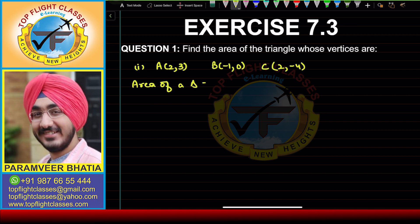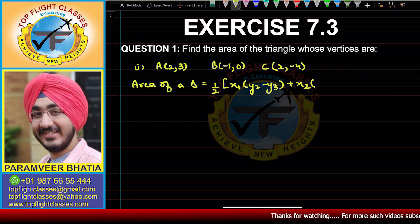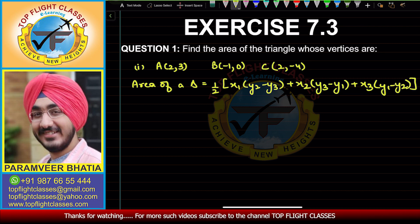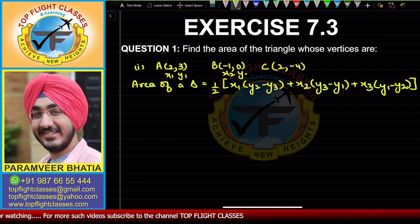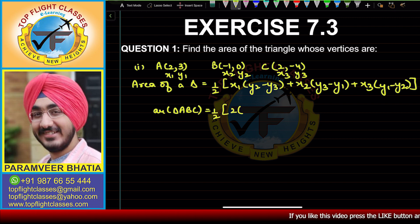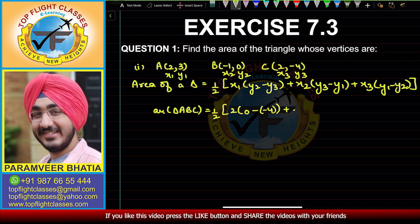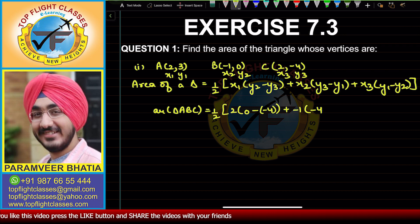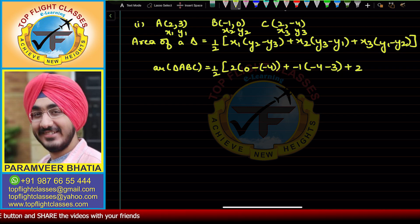Using the area formula: area of triangle ABC equals half times [x1(y2 − y3) + x2(y3 − y1) + x3(y1 − y2)]. Here x1 = 2, y1 = 3; x2 = −1, y2 = 0; x3 = 2, y3 = −4. Substituting: half times [2(0 − (−4)) + (−1)(−4 − 3) + 2(3 − 0)].